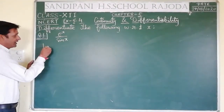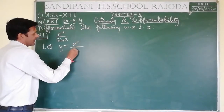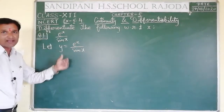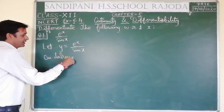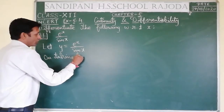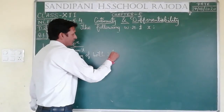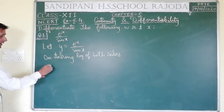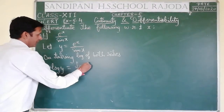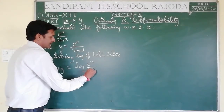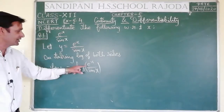Let y = e^x / sin x. On taking log of both sides: log y = log(e^x / sin x). We should first try to apply any log formula. log(m/n) = log m - log n. So log y = log(e^x) - log(sin x).